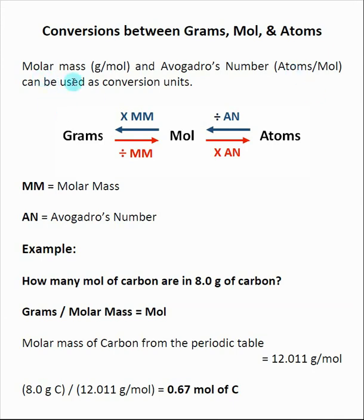And the idea is we really use molar mass and Avogadro's number as a type of conversion unit, the same way I can go from centimeters to meters. I can go from grams to moles to number of atoms. And so this is the basic diagram. And if you see this, we can go from one side to the other. If I take grams and I divide by the molecular weight, that will give me moles.